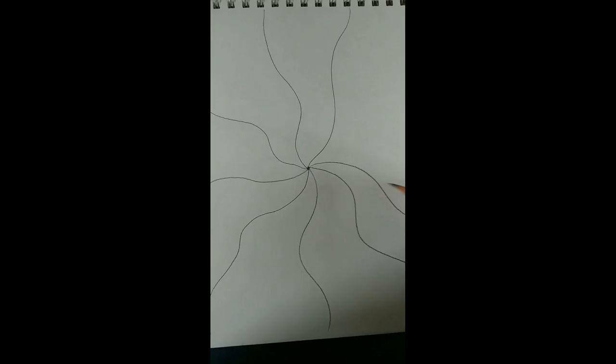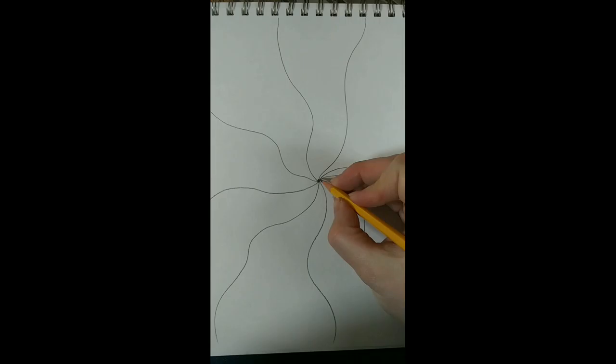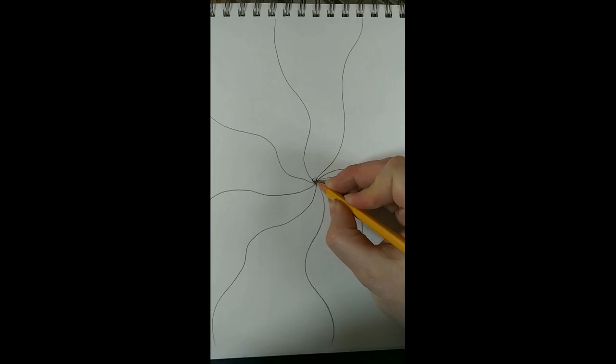Then you're going to pick one section to start in. You're going to use lines that curve up. They go up the line and curve across and go back down to fill in that space.